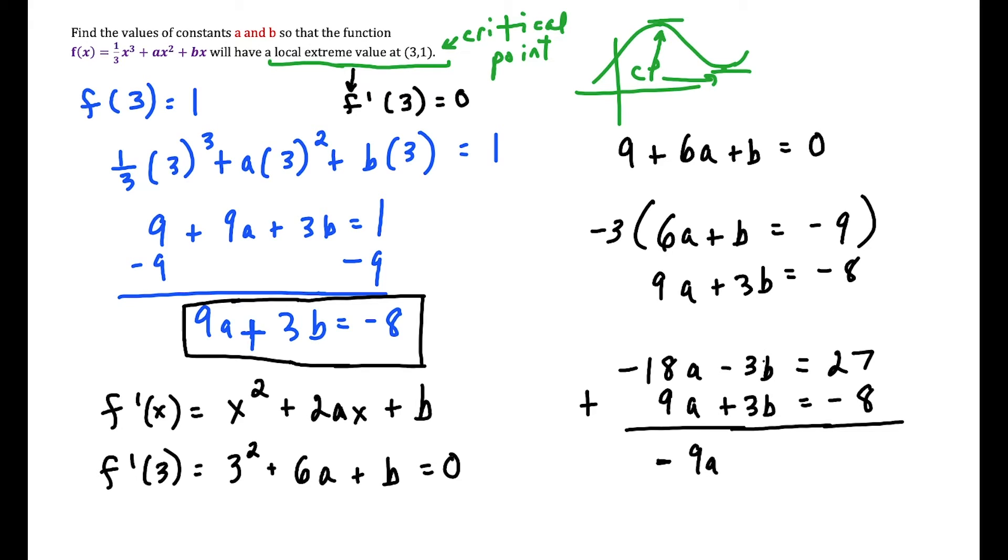-18a + 9a is -9a. These terms cancel. And this equals 27 - 8, which is 19. So our first constant here that we solve for, we have a = -19/9.